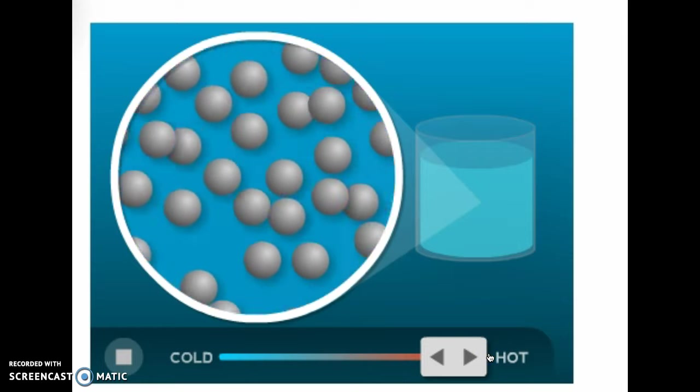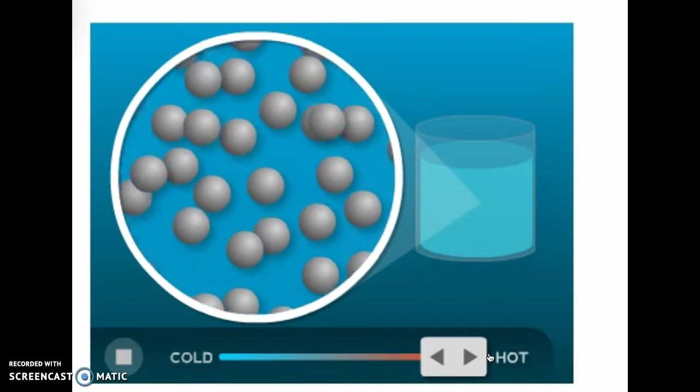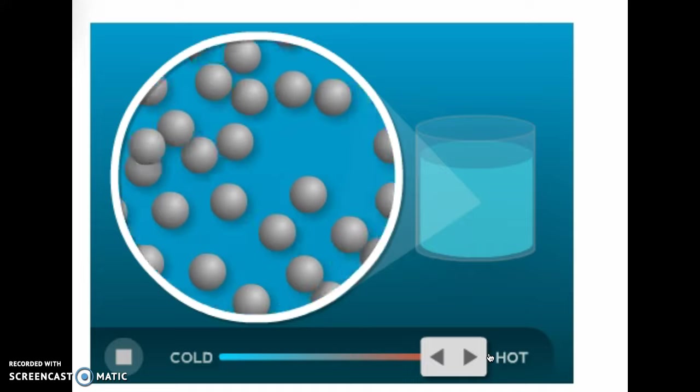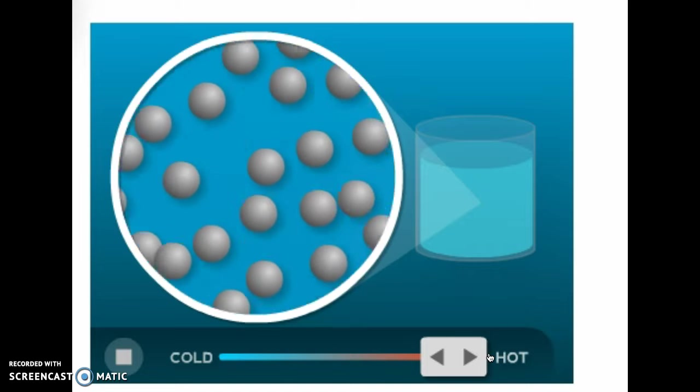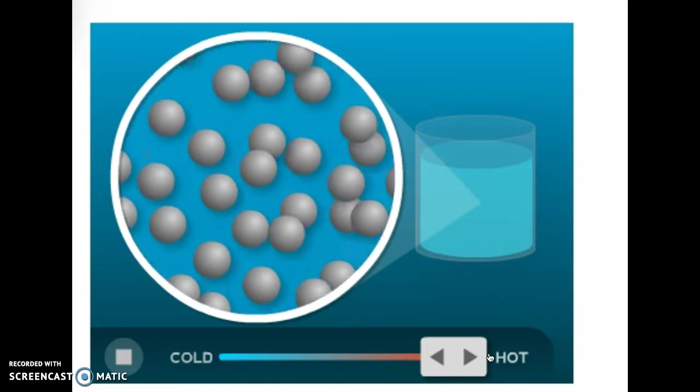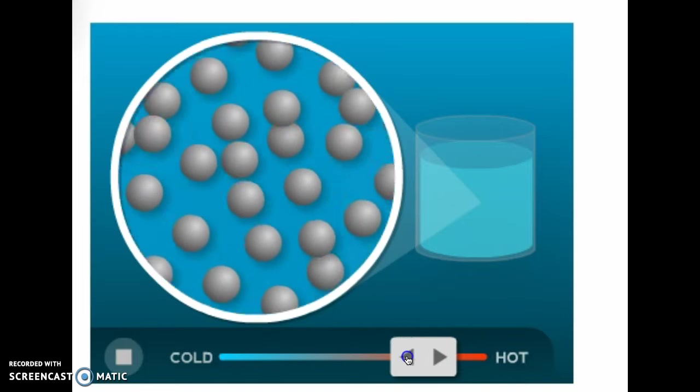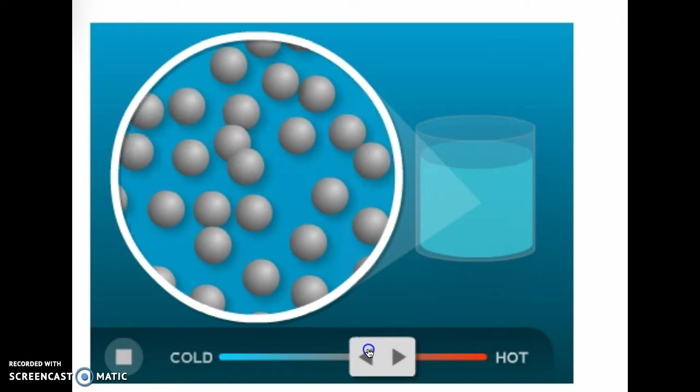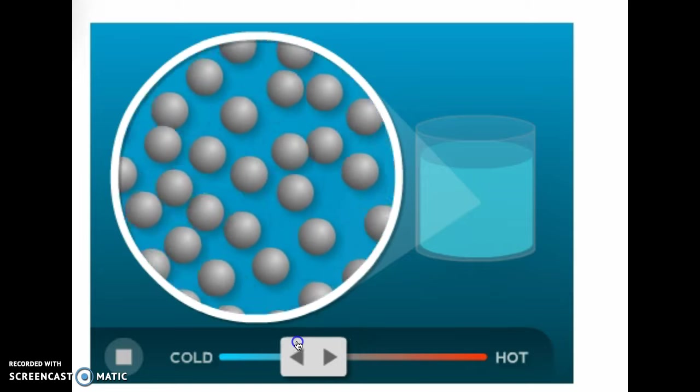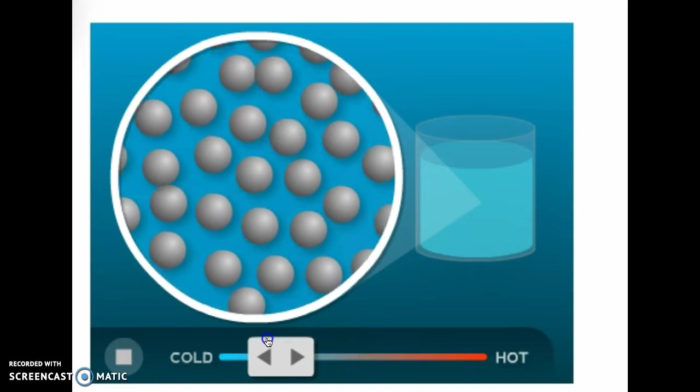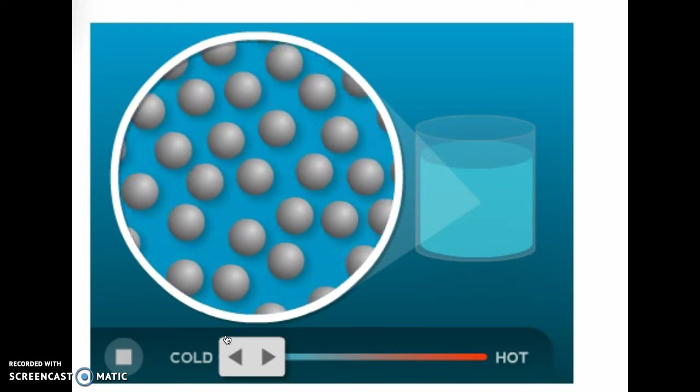So here in that hot liquid we can see how as we've increased the temperature or heated the substance, we see an increase in the speed of the particles and we can see an increase in the spaces between the particles. Now if we cool this liquid down we'd see a decrease in the speed of the particles and we see a decrease in the space between them.